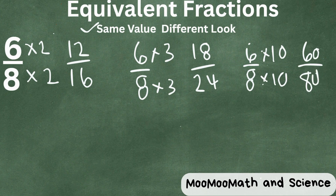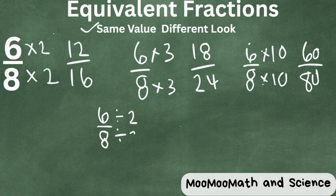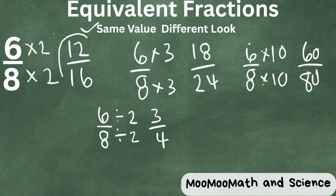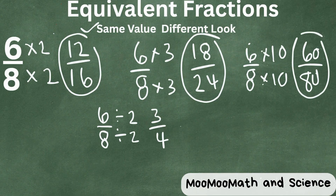You can also go the opposite. What if we take 6/8ths and divide the numerator and the denominator by 2? So 6 divided by 2 is 3, and 8 divided by 2 is 4. Look at the equivalent fractions that are created from 6/8ths.